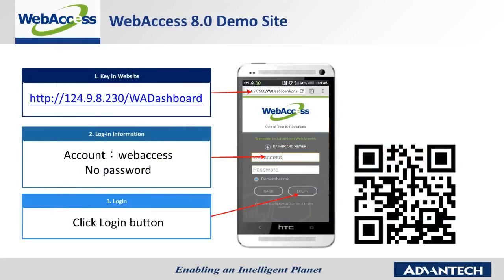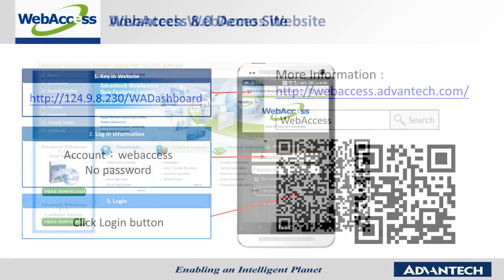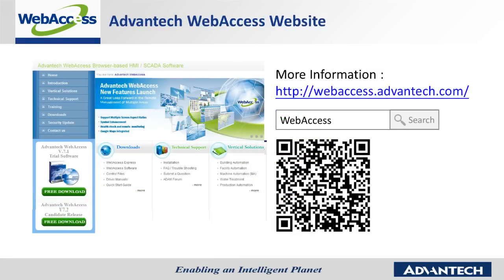After this introduction, here you can see a QR code of the Web Access 8.0 demo site. You can experience the new Web Access dashboard viewer immediately — please scan the QR code or type the URL. The login information is shown on the slide; please use 'WebAccess' as the account with no password. For more information about Advantech Web Access, please visit our website at webaccess.advantech.com.